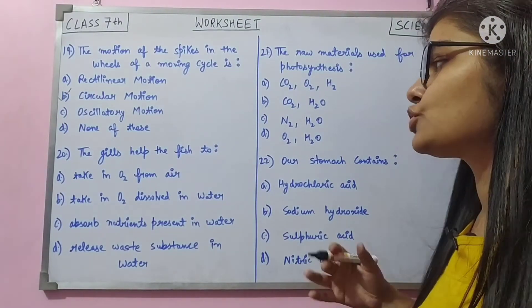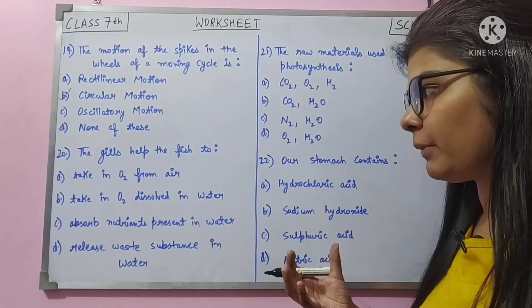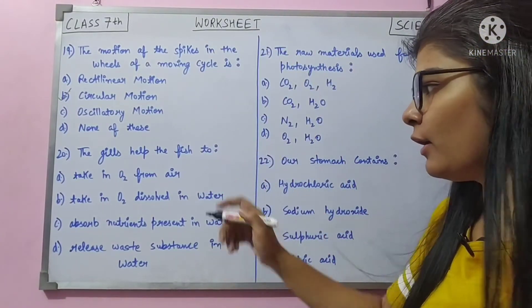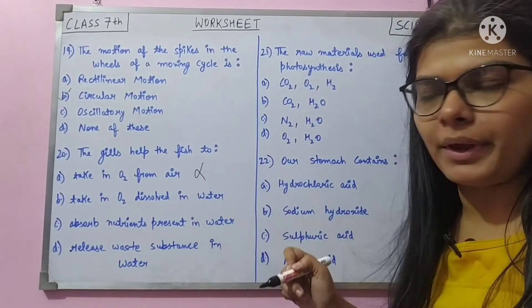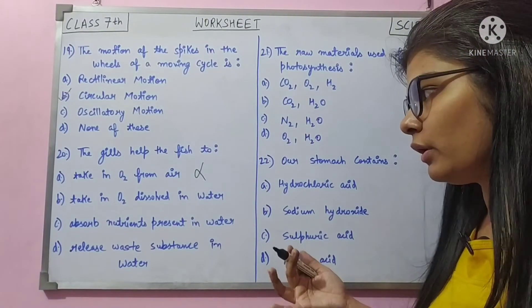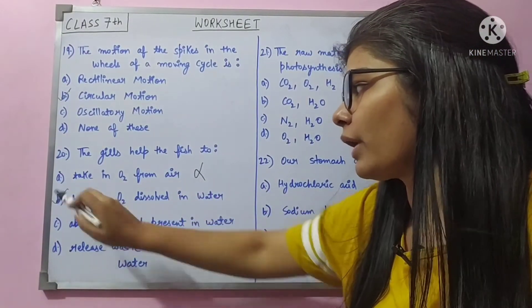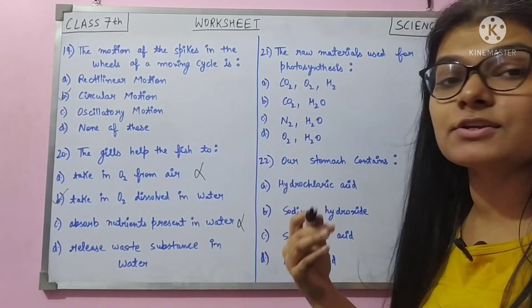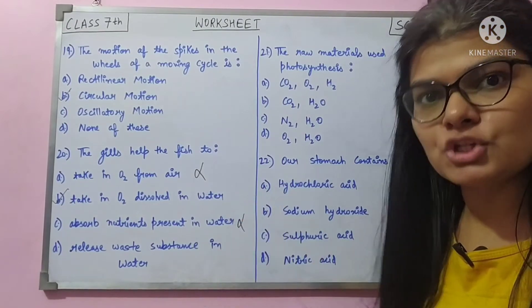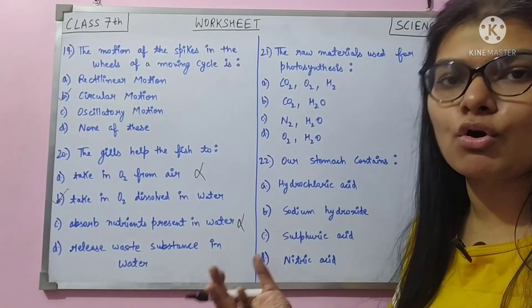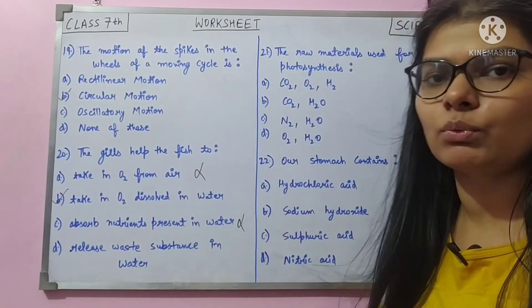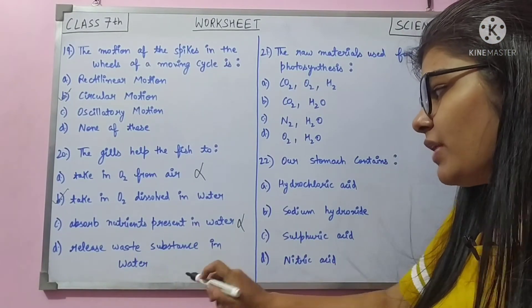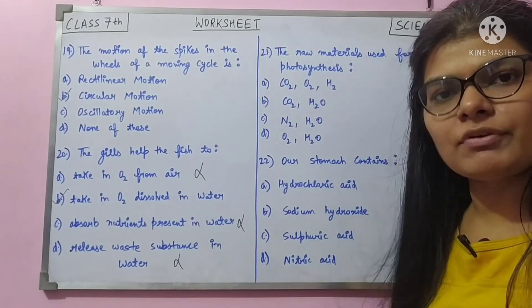Question 20: the gills help the fish to — fish lives in water, so it cannot take oxygen from air. The gills help the fish take in oxygen dissolved in water. Answer is B. Gills are respiratory organs — like our lungs — that help in breathing, taking in oxygen and releasing carbon dioxide. Absorbing nutrients is the job of the kidney or large intestine, not gills.